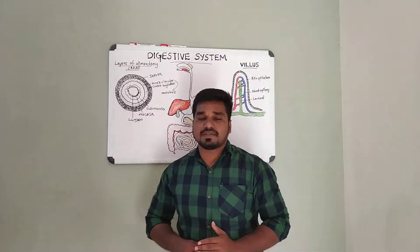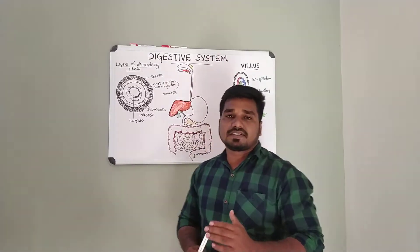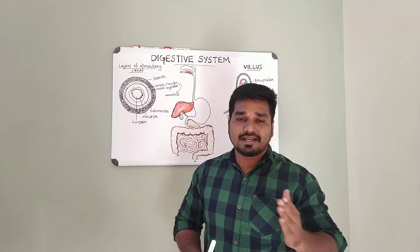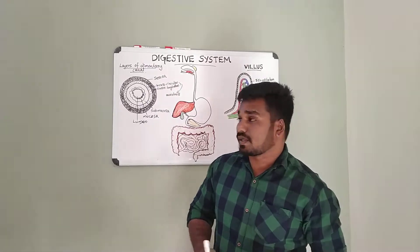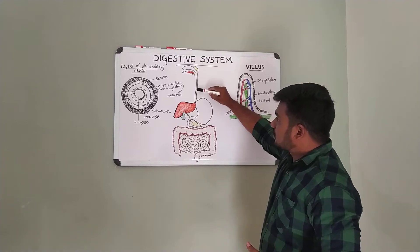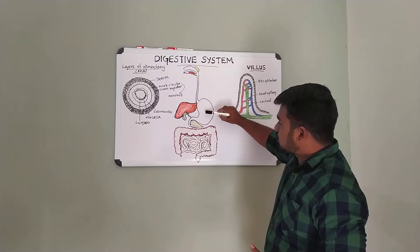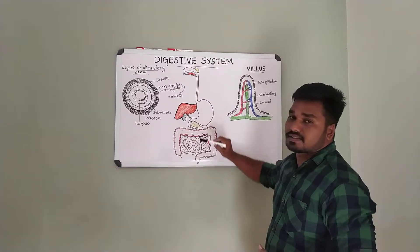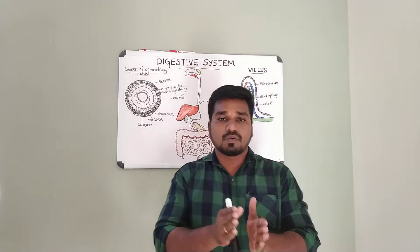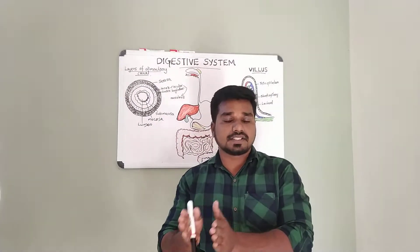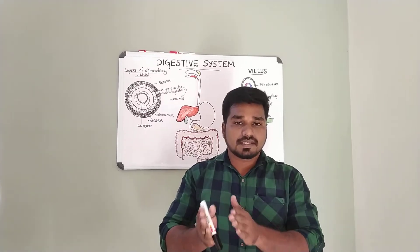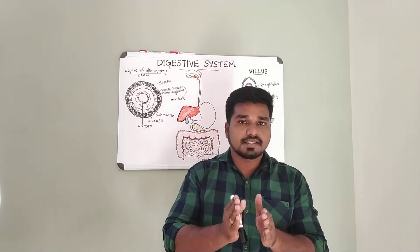The digestive system, studied in anatomy and physiology, consists of two main parts: the alimentary canal and the accessory organs. The alimentary canal, also called the elementary canal, includes the mouth, pharynx, stomach, small intestine, and large intestine. The accessory organs are structures that assist digestion but are not part of the canal itself.